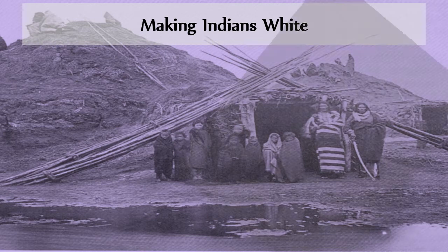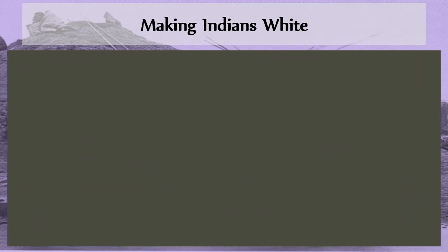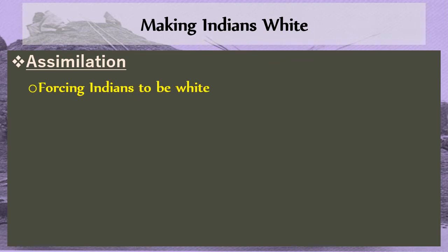In the 1880s there was a renewed push at making native peoples more like white Americans — an assimilationist idea. Assimilate means to make you similar to something else. The policy created to make Indians assimilate white culture, to force them to adopt white ways, was called the Dawes Act of 1887.